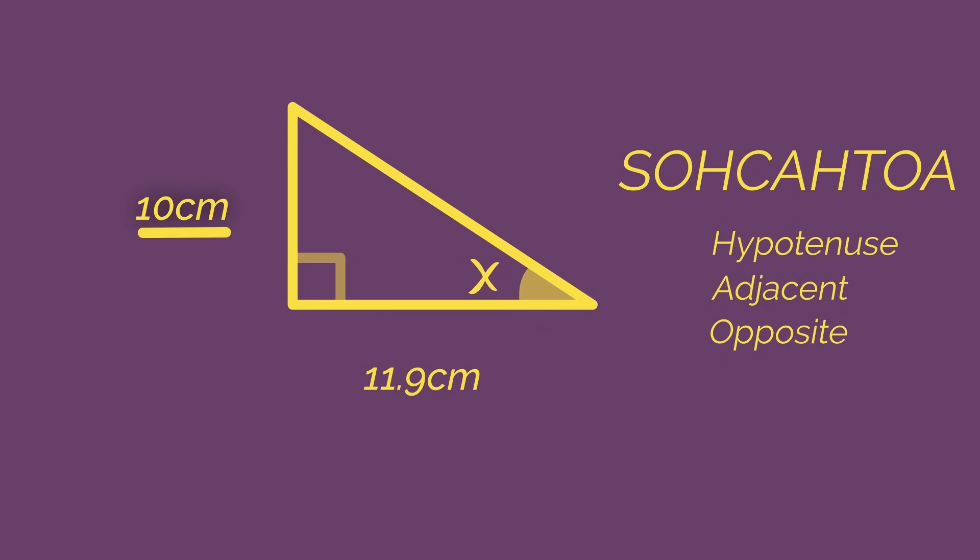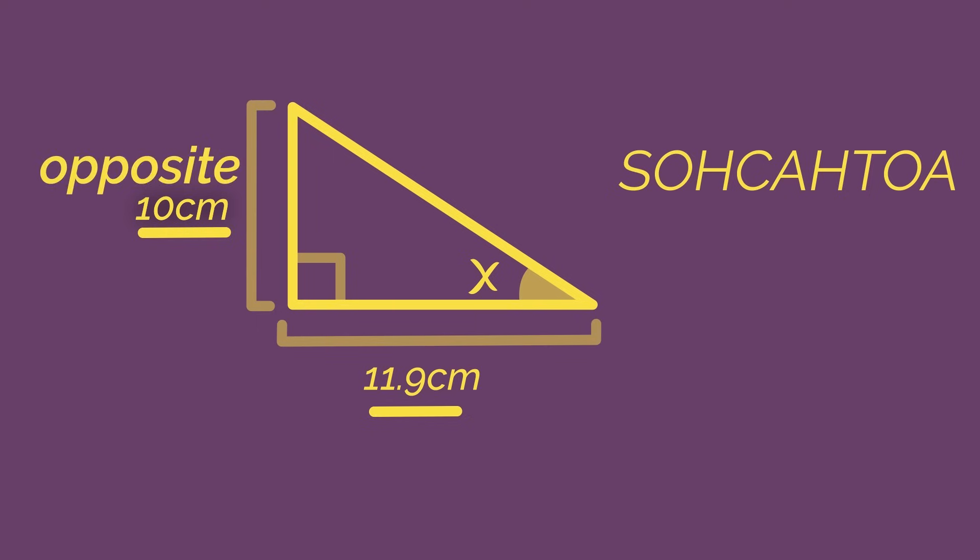What do we label the 10 centimeters and what do we label the 11.9 centimeters? Hopefully you thought the 10 centimeters is the opposite because it's opposite the angle, and the 11.9 is the adjacent because it's next to the angle.